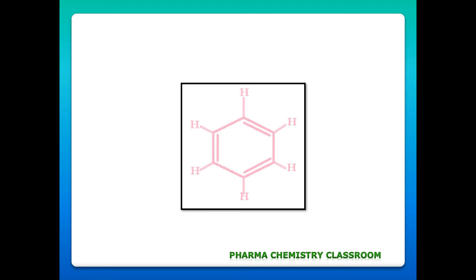Another example is benzene. Each carbon in benzene is attached to 2 other carbon atoms and 1 hydrogen atom — that is 3 attached atoms and no lone pairs. So the number of hybridized orbitals is 3, and the hybridization type is sp2.